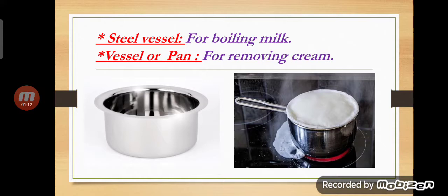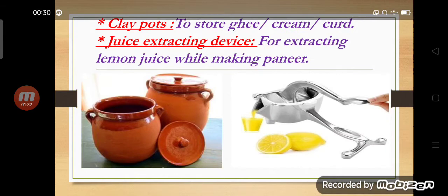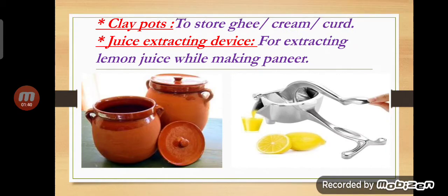The next object is a vessel or pan. A vessel or pan is also used for removing cream. In short, if we want to make ghee from cream, we use a vessel or pan. The next object is pots made of clay, or clay pots. We use clay pots for storing ghee, cream, and also to make curds.